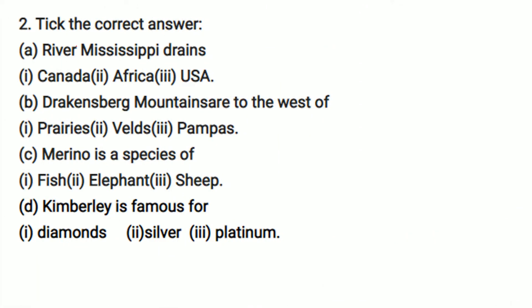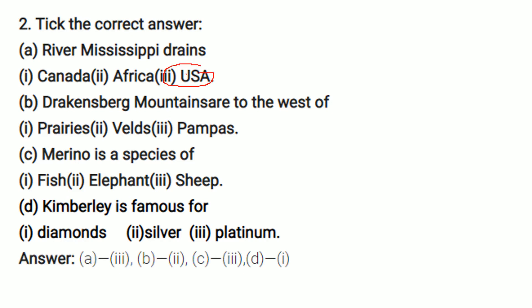For the tick-the-correct-answer section: River Mississippi drains in the USA. Drakensberg mountains are to the west of the velds. Merino is a species of sheep. And Kimberley is famous for diamonds.